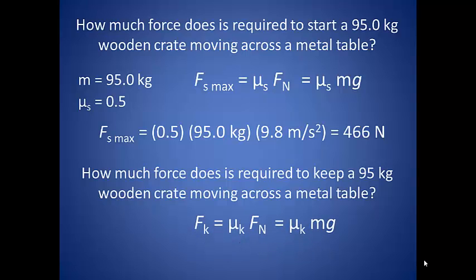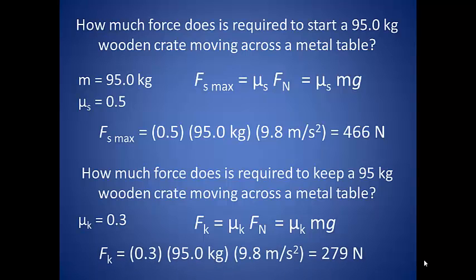So the coefficient for the kinetic friction for wood moving across a metal surface is 0.3. So substituting that constant gives us a force of 279 newtons.